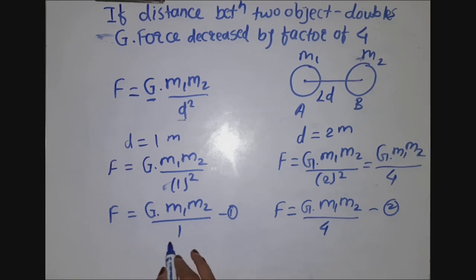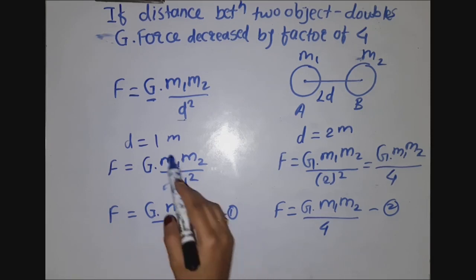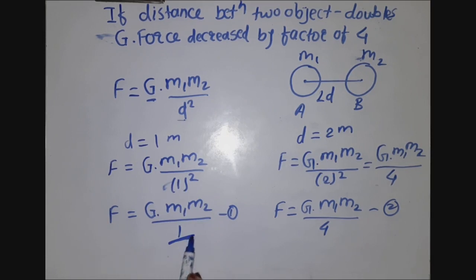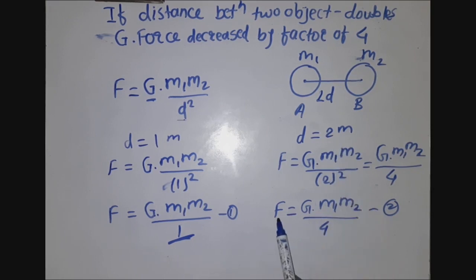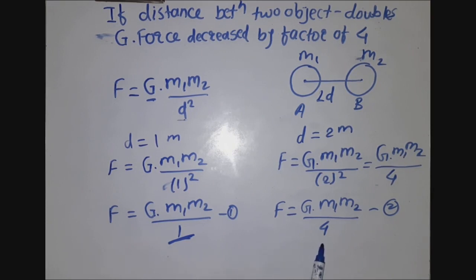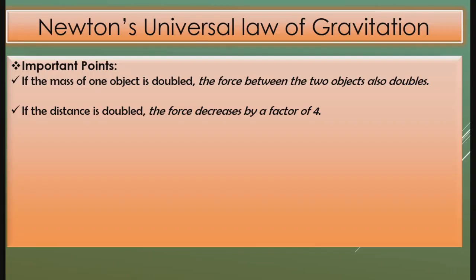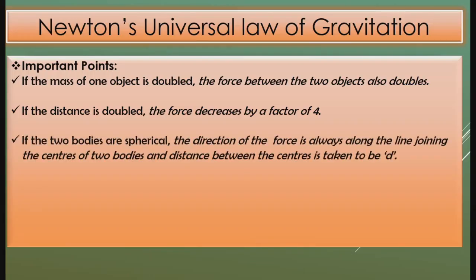Comparing equation 1 and equation 2, when the distance is 1 meter the denominator is 1, and when the distance doubles to 2 meters the denominator becomes 4 — so the force decreases by a factor of 4. The third point is: if the two bodies are spherical, the direction of the force is always along the line joining the centers of the two bodies.